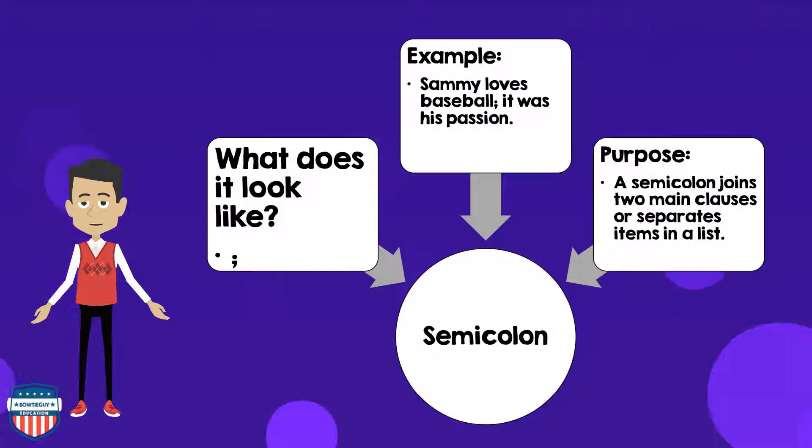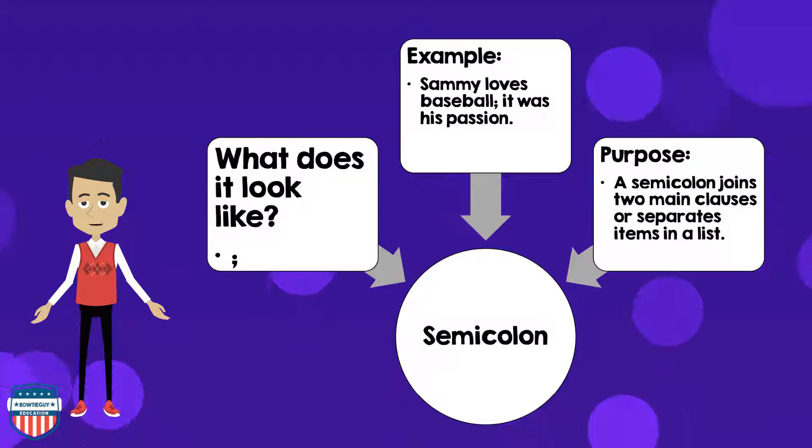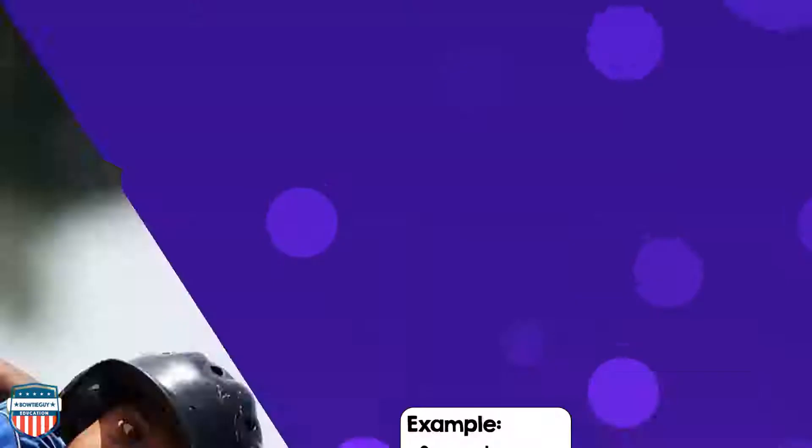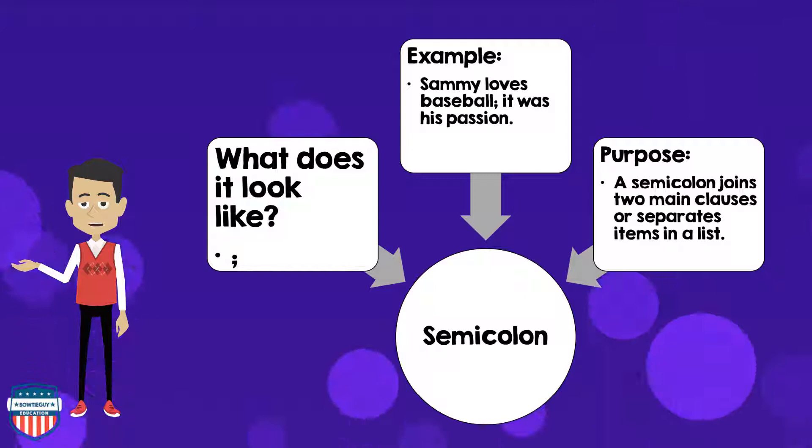Next, let's talk about the semicolon. What does it look like? The semicolon is a dot with a comma underneath it. An example of a semicolon in use: Sammy loves baseball; it was his passion. The purpose of a semicolon: it joins two main clauses or separates items in a list.